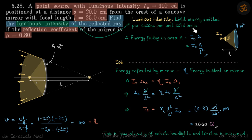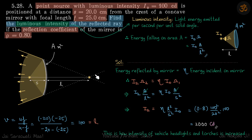So luminous intensity is light energy emitted per second per unit solid angle. In this particular case, light energy falling on area A will be i-naught times omega. Intensity multiplied by solid angle gives the total energy falling on that area in one second. We write omega as A divided by l squared — this is just a recap of what luminous intensity is.